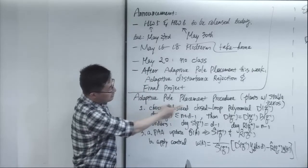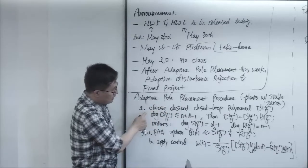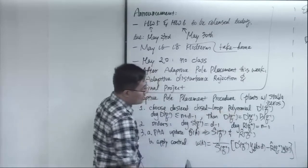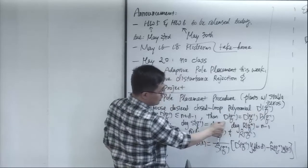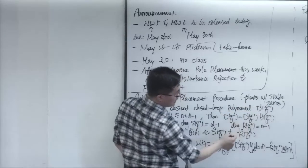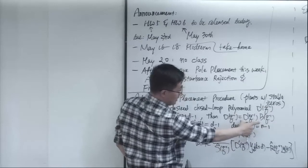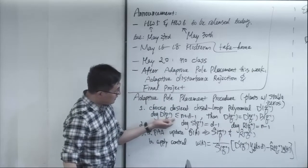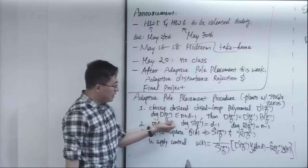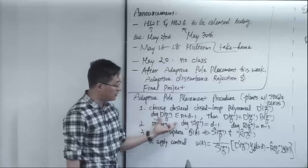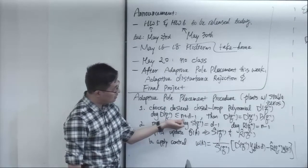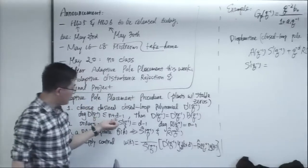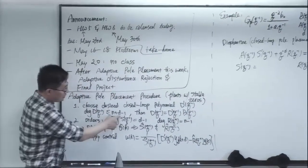As an overview, the procedure for adaptive pole placement is as follows. First, we choose some desired closed loop polynomial d prime. This is only part of the closed loop polynomial if the plant has stable zeros. The stable zeros will come in as part of the closed loop polynomial, so dq is really d prime and b. Then we specify the orders of the closed loop polynomial. Under the solvability condition of the Diophantine equation, the degree of d prime needs to be less than or equal to n plus d minus 1, where n is the order of the denominator and d is the order of the delay elements in the plant.